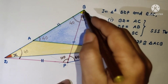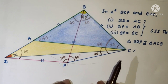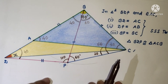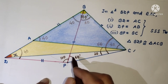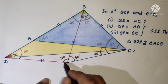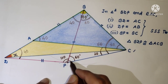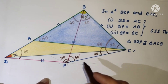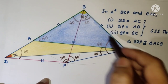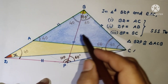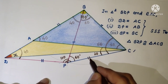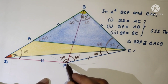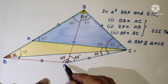Several angles are all 60 degrees, and BPC is an equilateral triangle, so this length will also be equal — that is, PD is equal to PC.